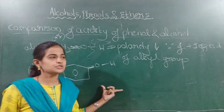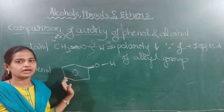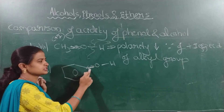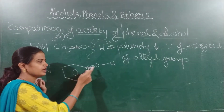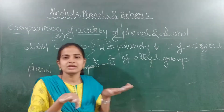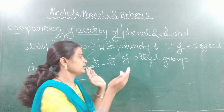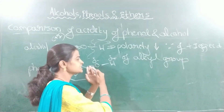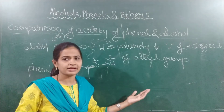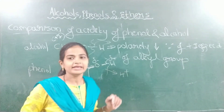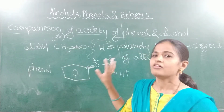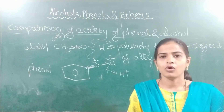Polarity increases because of the minus I effect exhibited by the phenyl group or benzene group. It drags electrons towards itself. As the polarity between oxygen and hydrogen increases, charge separation happens, and the O-H bond can easily break down to release the H⁺ ion easily. Therefore, the conclusion: phenols are more acidic than alcohols.